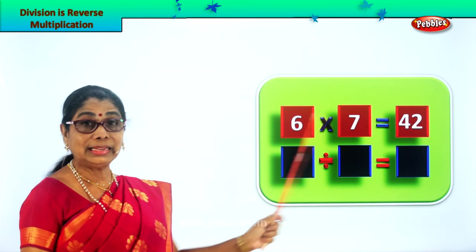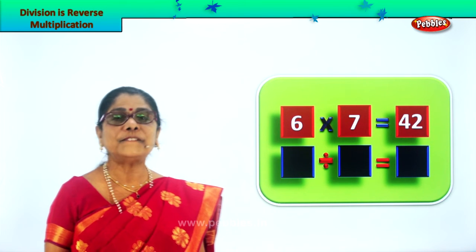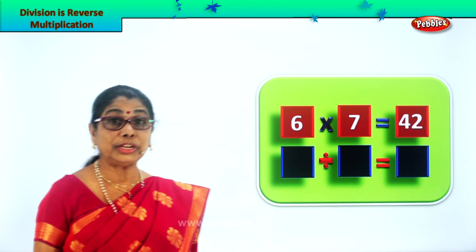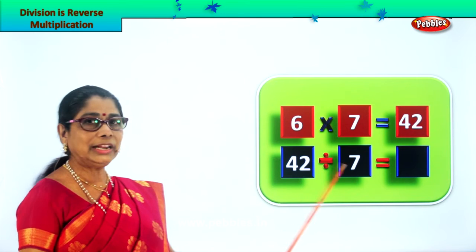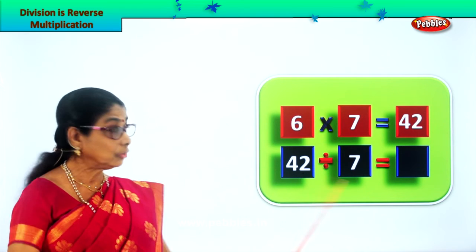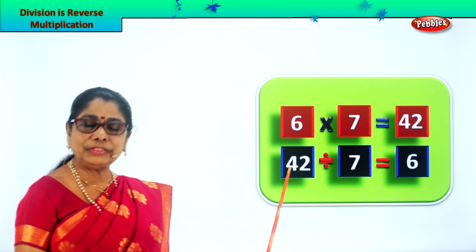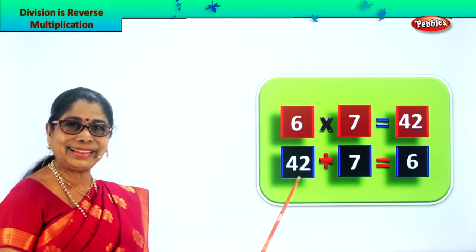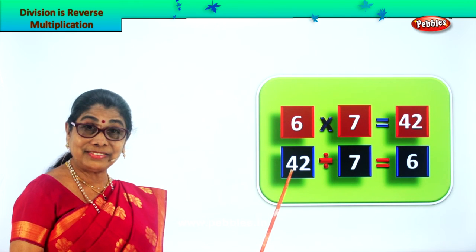Six into seven — six multiplied by seven is equal to 42. Six sevens are equal to 42. Let's divide 42 divided by seven. Seven goes into 42 how many times? Six times. So our answer is six. 42 divided by seven gives you the answer six. Division is reverse multiplication — six into seven, six sevens are 42. We learned division is reverse multiplication.